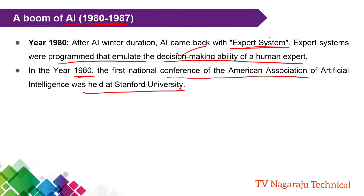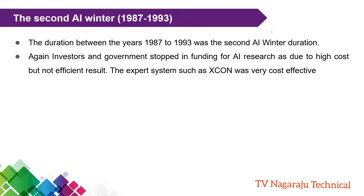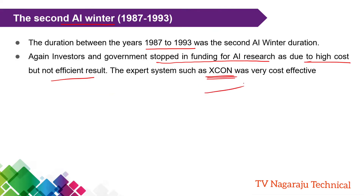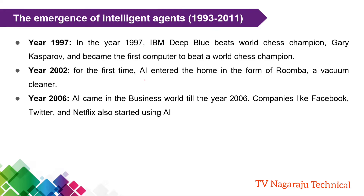Even though AI was booming and expert systems were developed, the second AI winter hit. From the year 1987 to 1993, the government stopped funding AI due to high cost. The cost of research was very high but efficiency was not sufficient. Even though robots, chatbots, and expert systems were prepared, they were very costly, and that is the reason the government stopped funding.